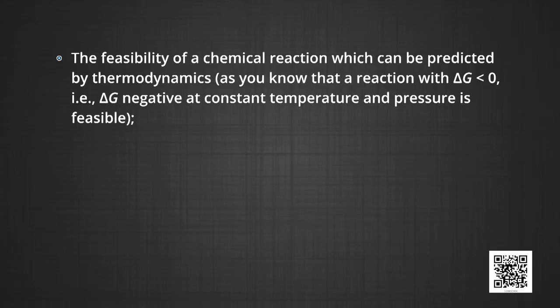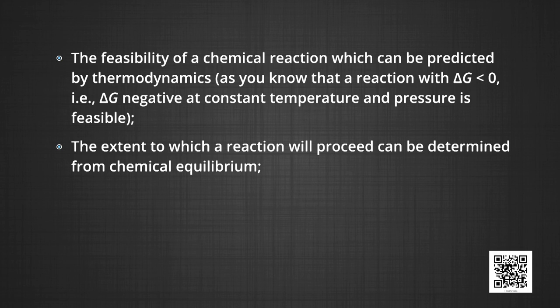First of all, chemistry by its very nature is concerned with change. Substances with well-defined properties are converted by chemical reactions into other substances with different properties. For any chemical reaction, chemists try to find out the feasibility of a chemical reaction, which can be predicted by thermodynamics. As you know, a reaction with delta G less than zero — that is, delta G negative — at constant temperature and pressure is feasible. The extent to which a reaction will proceed can be determined from chemical equilibrium.